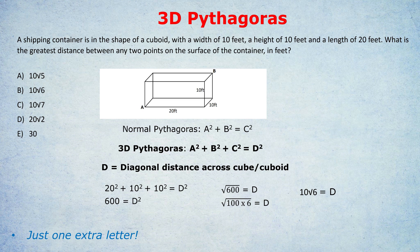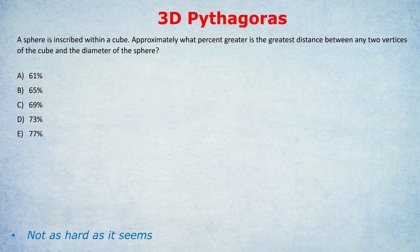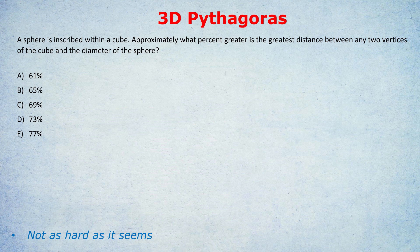Well, what about a harder example? For example, this one. We've got a sphere inscribed within a cube, and then the question is, approximately what percent greater is the greatest distance between any two vertices of the cube and the diameter of the sphere? Harder question. And even if you get it right using my method, some students would take two minutes, and I've got an additional shortcut to give you where we can reduce that to something like 30 seconds. So what do we do? Let's explain it.